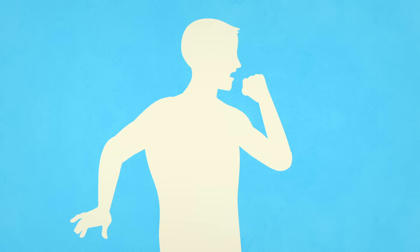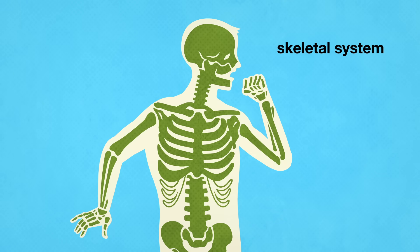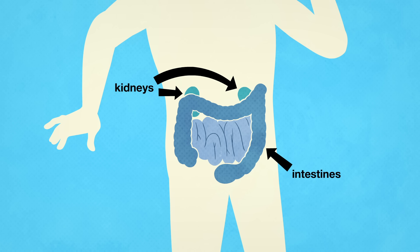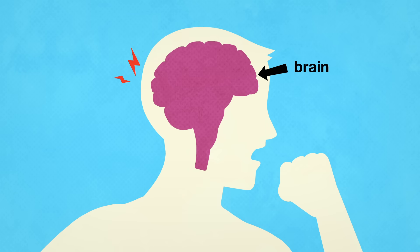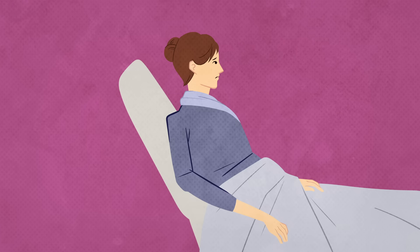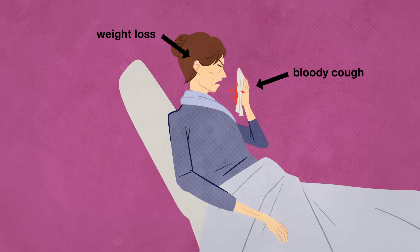From here, microbes can spread to the skeletal system, causing back pain and difficulty moving, to the kidneys and intestines causing abdominal pain, and to the brain, causing headaches and even impaired consciousness. These symptoms produce the classic image of TB—weight loss, a hacking, bloody cough, and ashen skin.